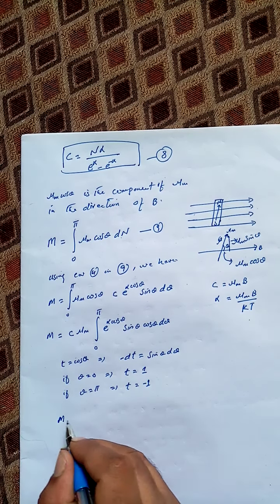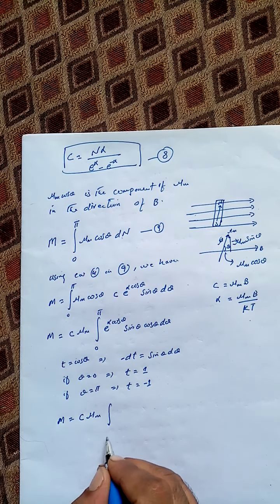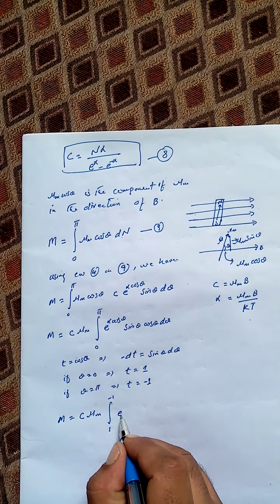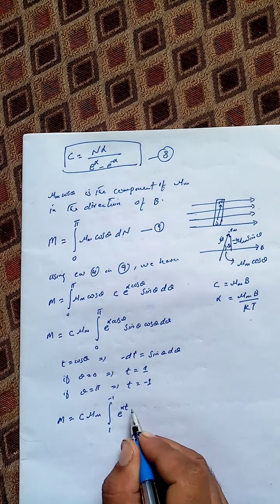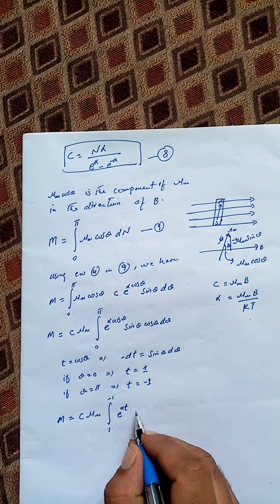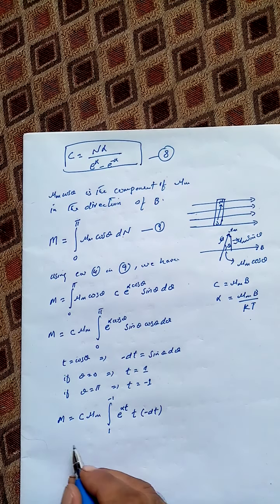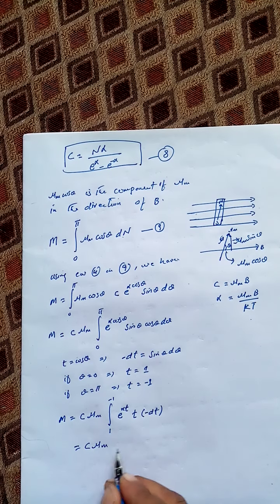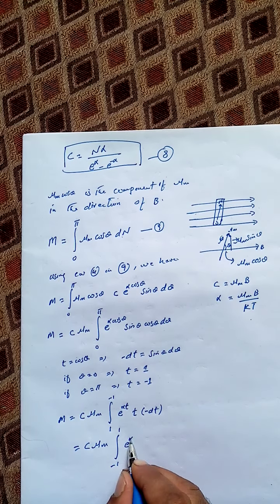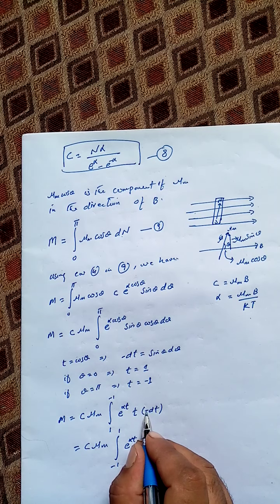The equation reduces to M equals C times μM, with limits changing from 1 to minus 1. Substituting: e raised to the power αt for the exponential, t for cosθ, and minus dt for sinθ dθ. Removing the negative sign and reversing the limits gives the integral from minus 1 to 1 of e raised to the power αt times t dt.